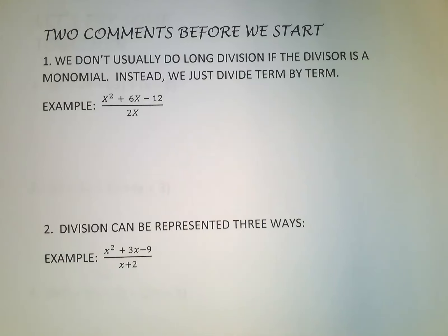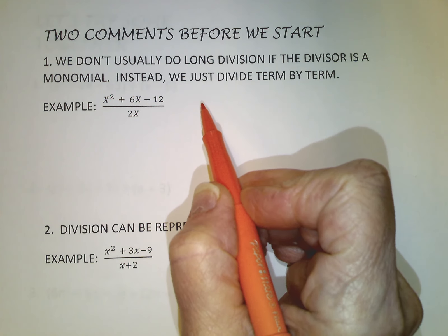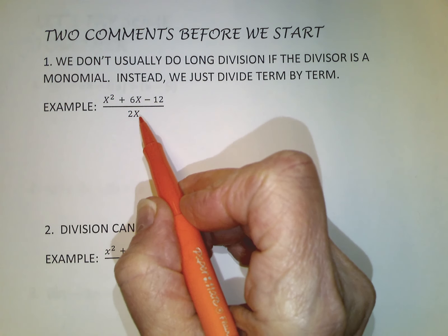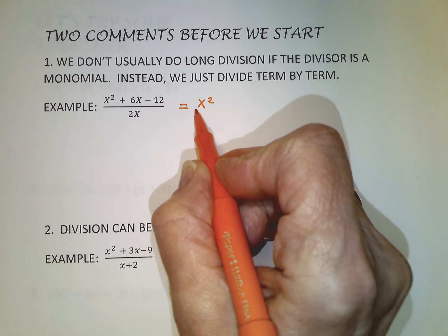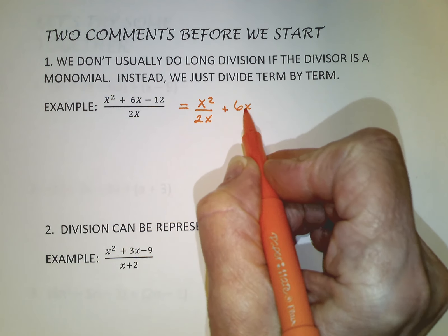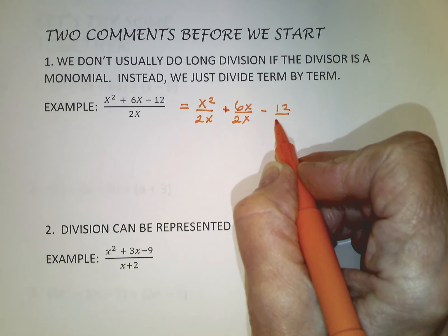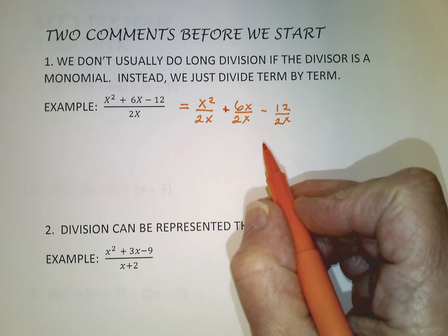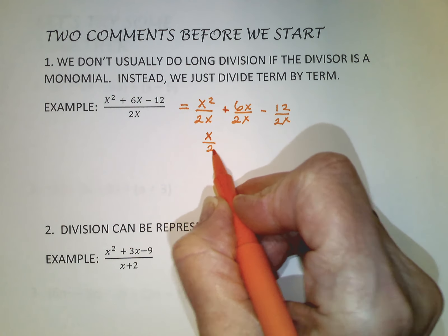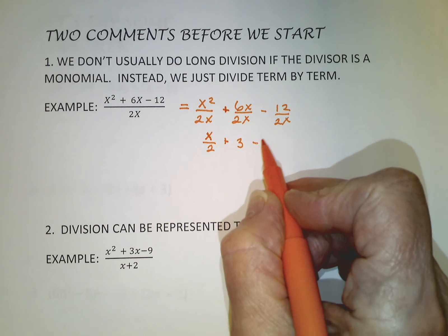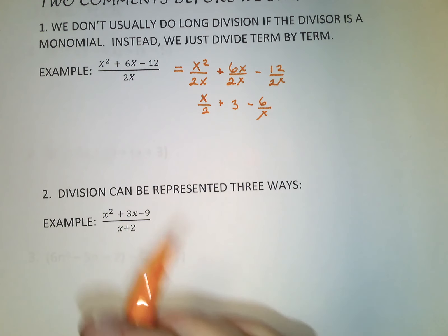Before we start, two comments I can't help making. For polynomial long division, we do not usually go to that trouble if the divisor is a monomial. Instead we just work term by term — we rewrite it so each term is being divided by 2x, like the distributive property of division, and then simplify each term. This one becomes x over 2, this one becomes 3, and this one becomes negative 6 over x. Pretty simple, but that's only because we were dividing by one term.